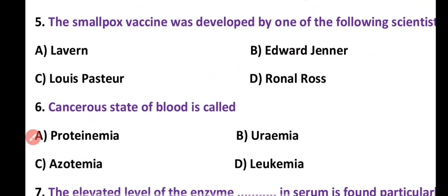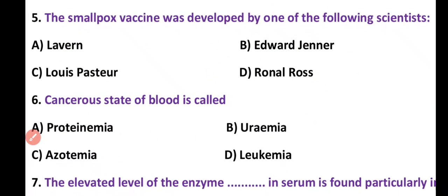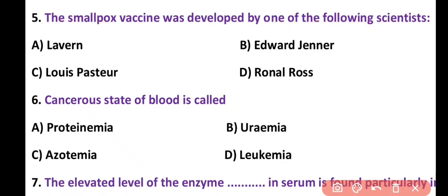Question 5. Smallpox vaccine was developed by one of the following scientists: Leviron, Edward Jenner, Louis Pasteur, or Ronald Ross. Correct answer is option B. Smallpox vaccine was developed by Edward Jenner.